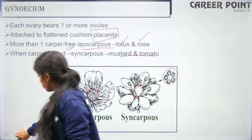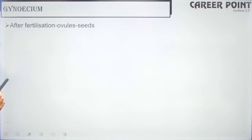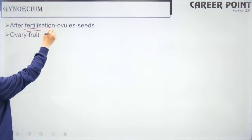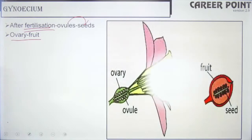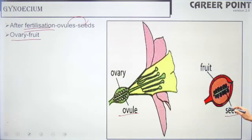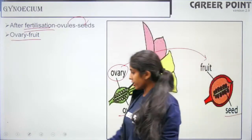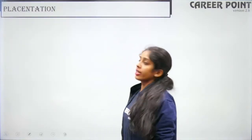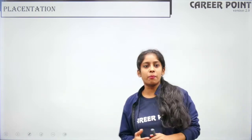After fertilization, your ovules become your seeds and your ovary becomes your fruit. So the transformation is: ovule → seed, ovary → fruit.